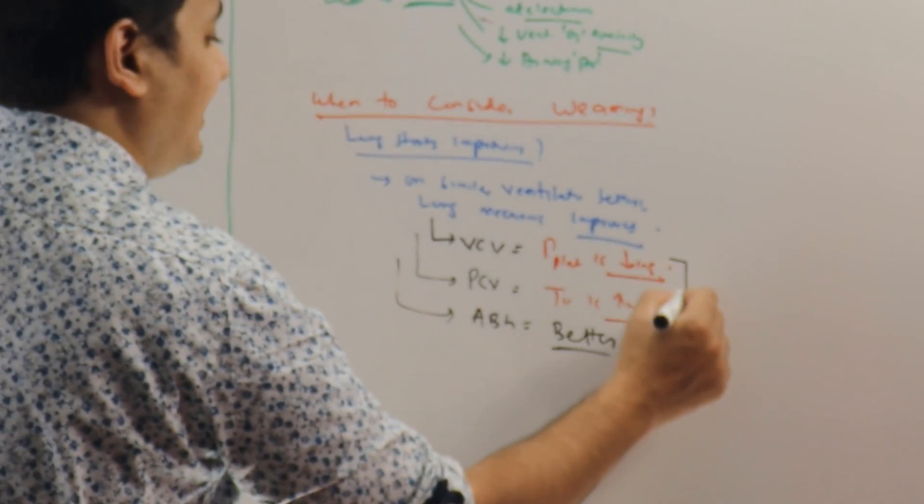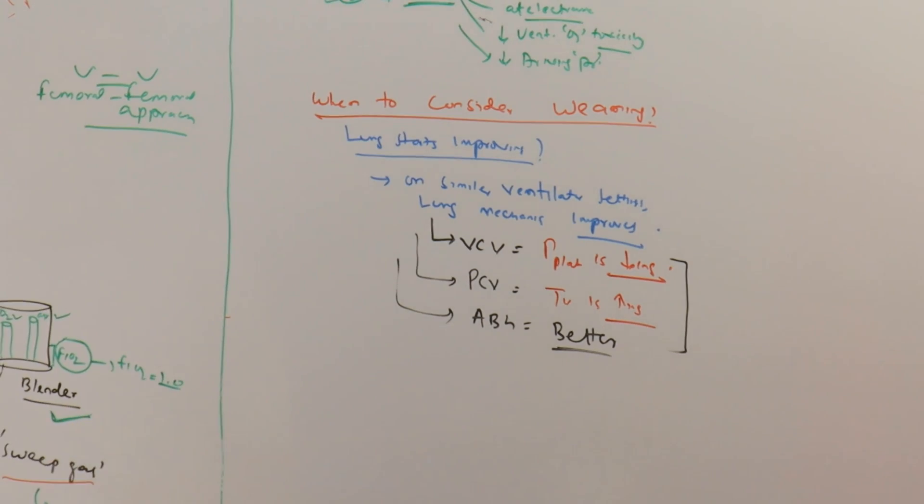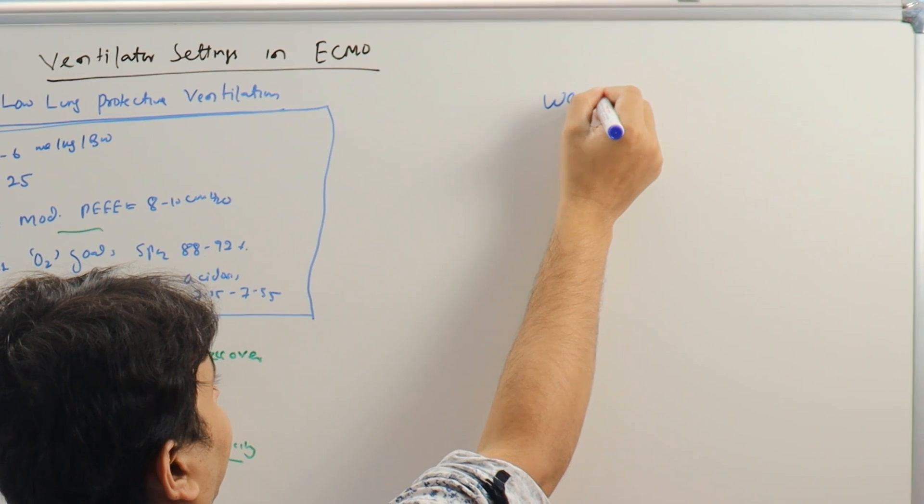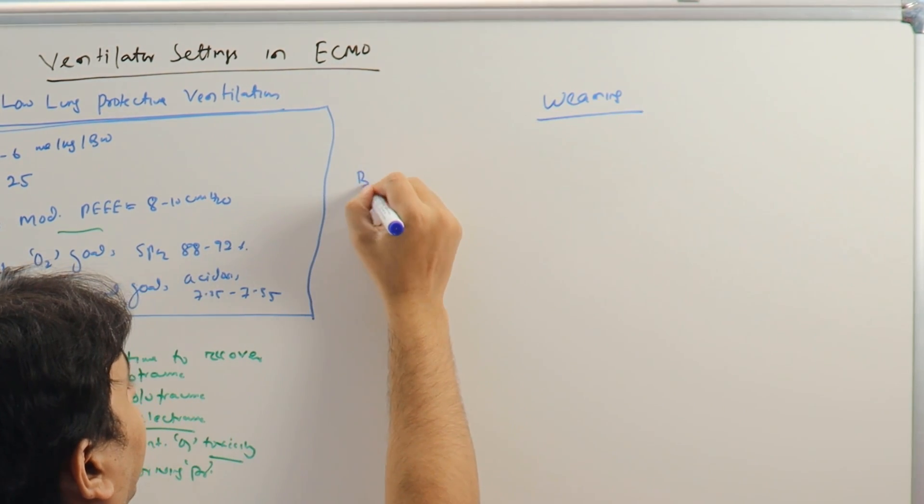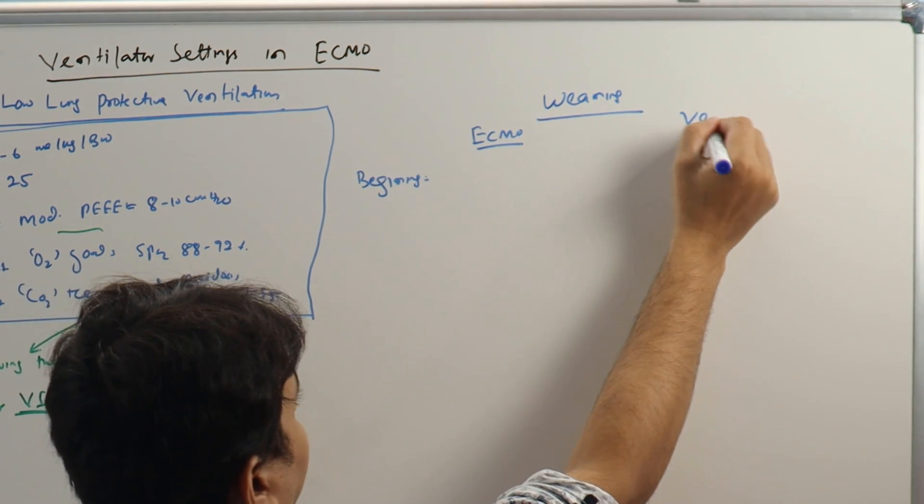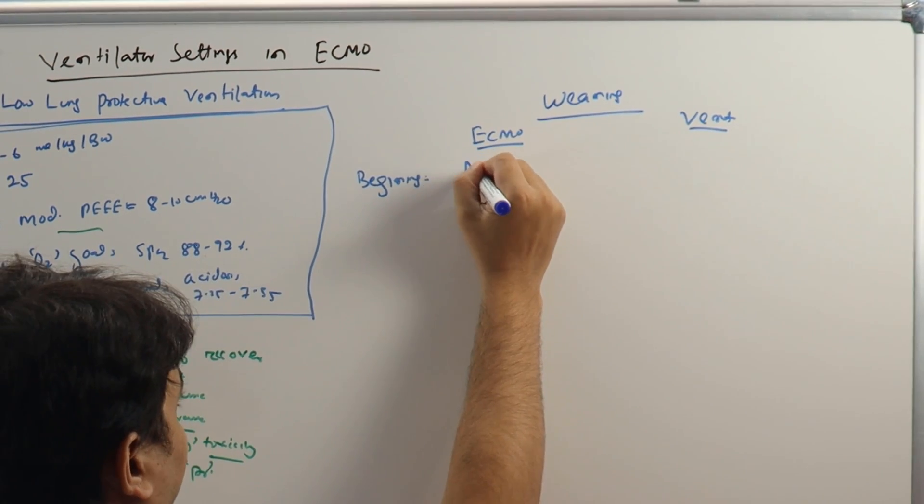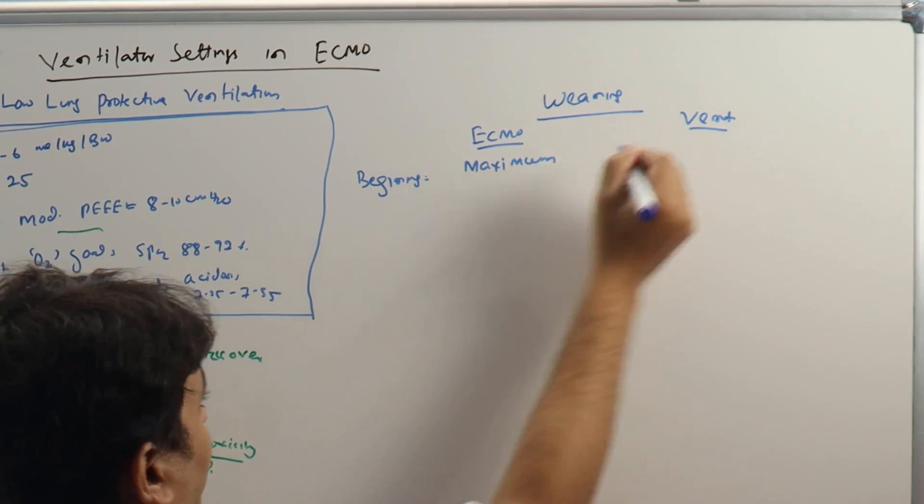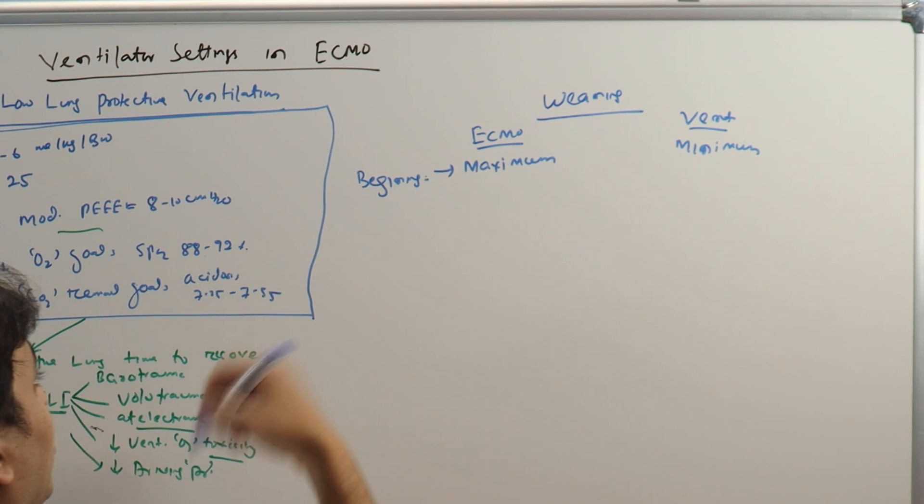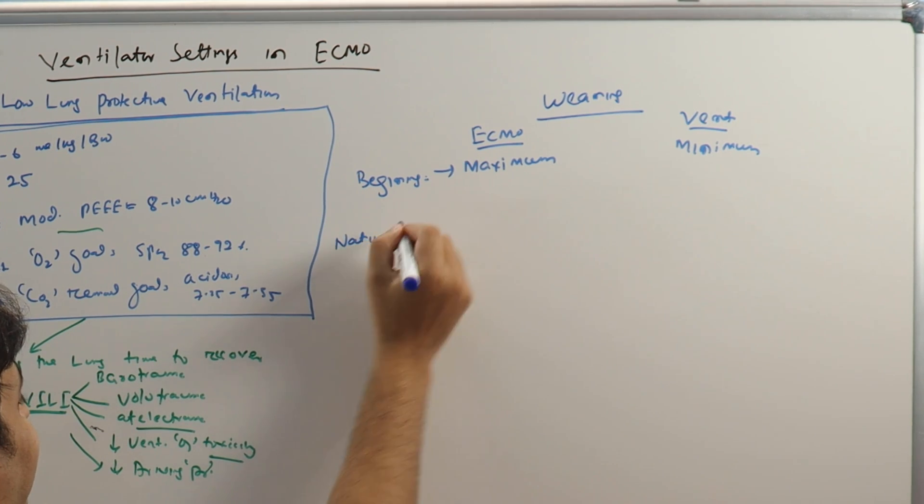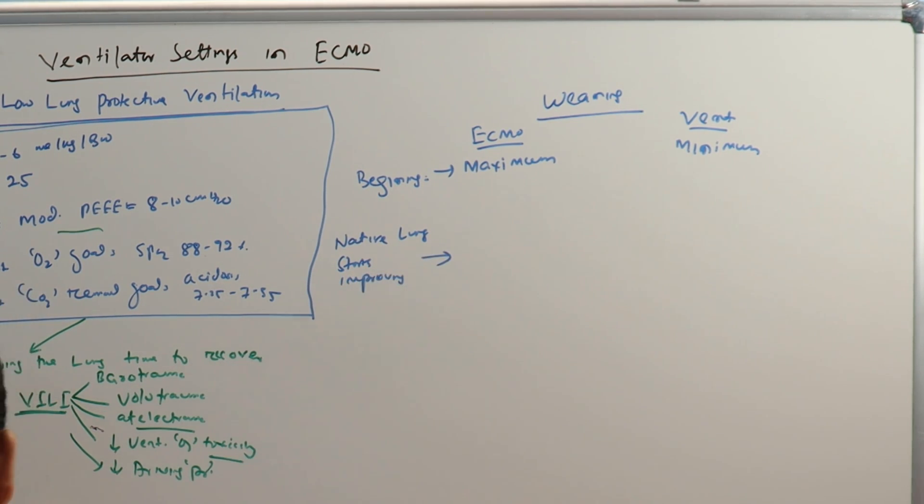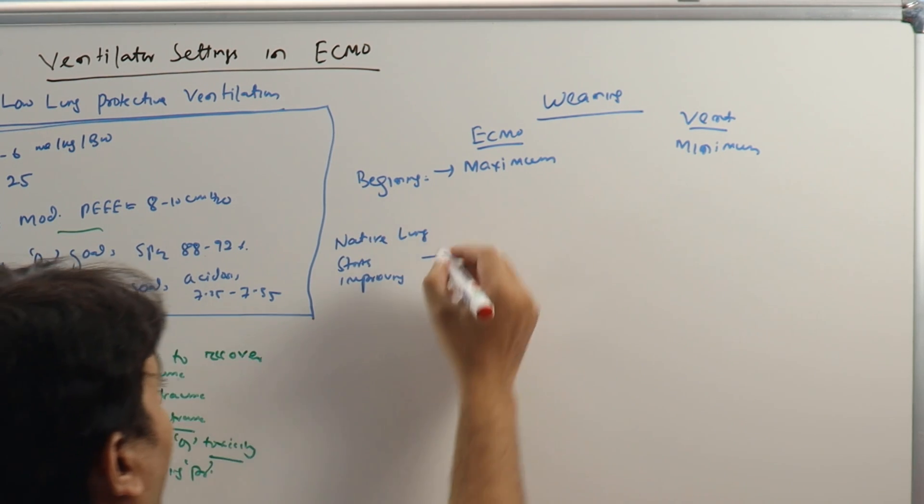And how is it exactly done? In the beginning, ECMO support is maximum and ventilator support is minimum. As the native lung improves, the native lung starts improving. Here, what you can do is you can come down on ECMO.